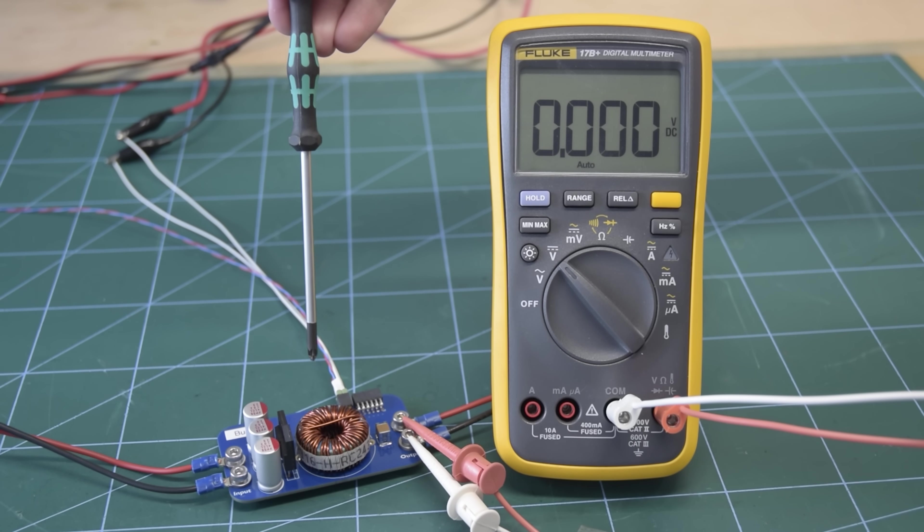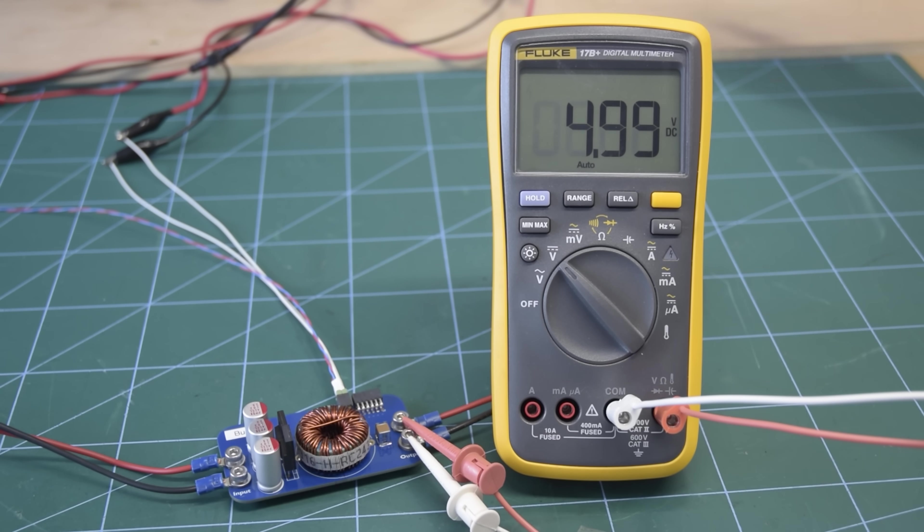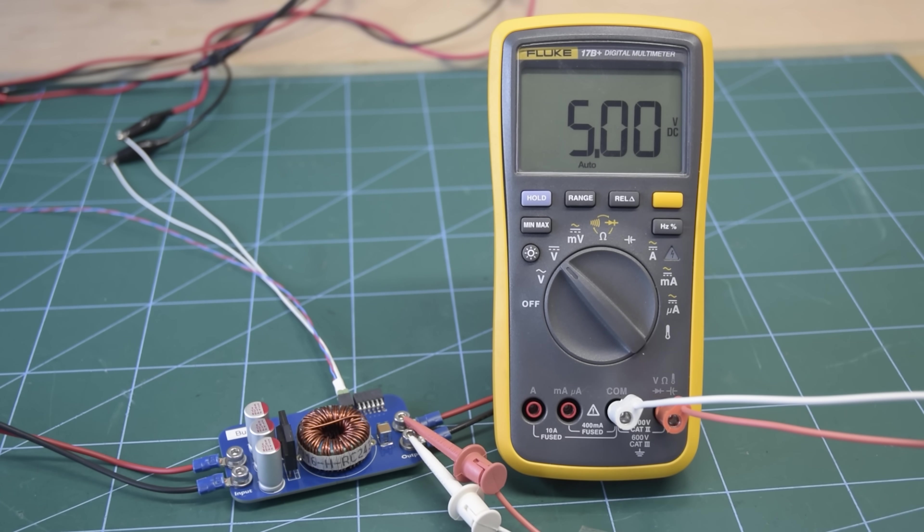Starting with the buck converter, I'm going to run all of these converters with a 50% duty cycle and a 10 volt input. So let's see what we get out of our buck converter. Wow, exactly 5 volts. So that is what we expect for the buck converter. We're putting in 10 volts and getting less than 10 volts out. If you remember, the buck converter output must be less than the input for it to work.